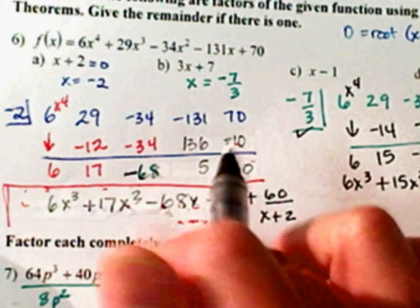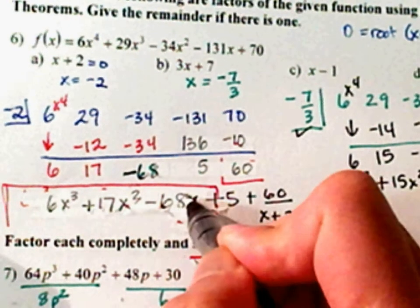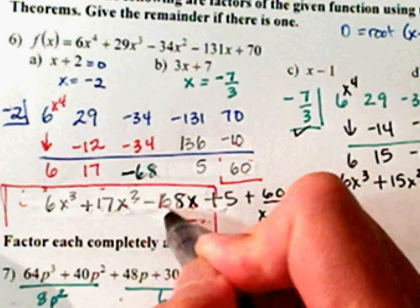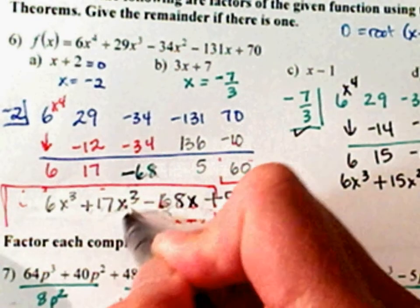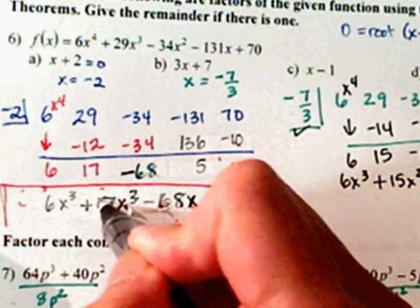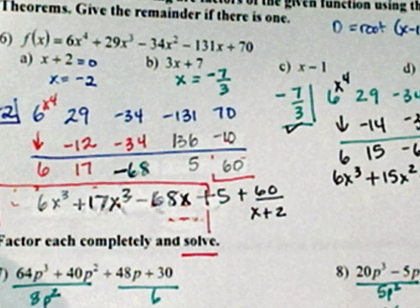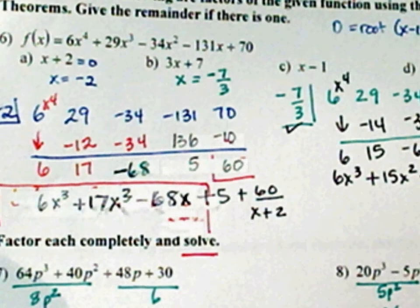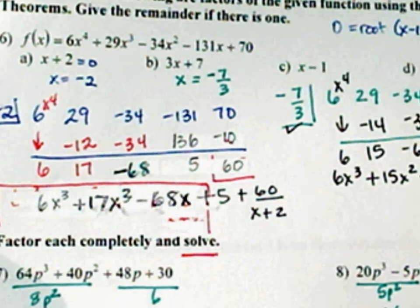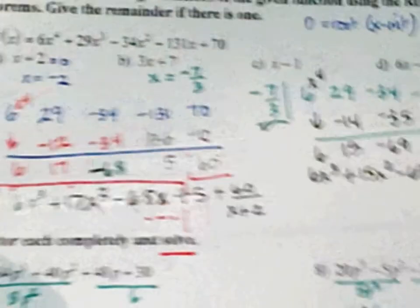So your final answer is 6x to the third plus 17x squared minus 68x plus 5 plus 60 over x plus 2. Let me rewrite that so you guys can see it a little bit better. Sorry about that, but great job for catching that. Alright, let's go to page 3.